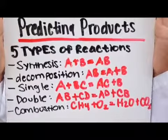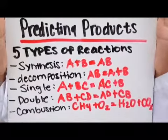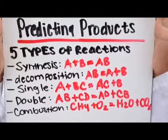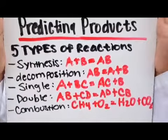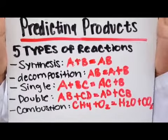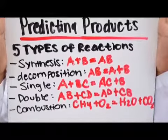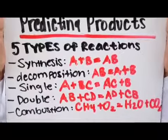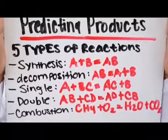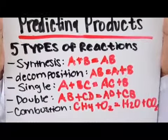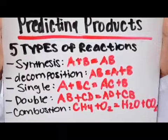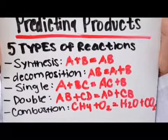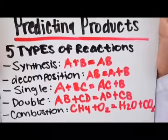Single replacement: A plus BC is equal to AC plus B. Double replacement: AB plus CD is equal to AD plus CB. And combustion, which is the easiest because the end product is always the same — CH4 plus O2 is equal to H2O plus CO2.